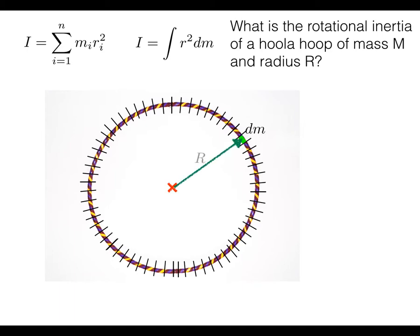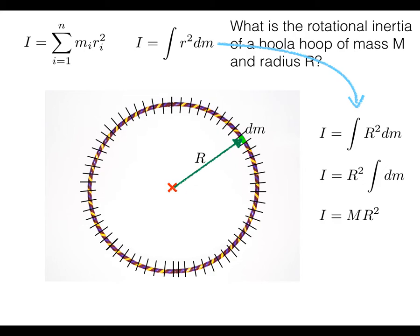We pick some dm that isn't special and note it is at radius R from the axis of rotation. The key point is that no matter which dm you choose on the hula hoop, it will always be at distance capital R — so R is a constant, not a variable. Substituting into the integral, R² comes out front and we just get R² times the integral of dm. Integrating all the dm's gives back total mass M, so the rotational inertia of the hula hoop is MR².